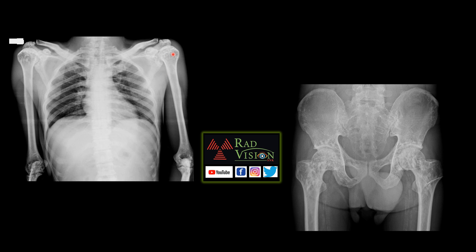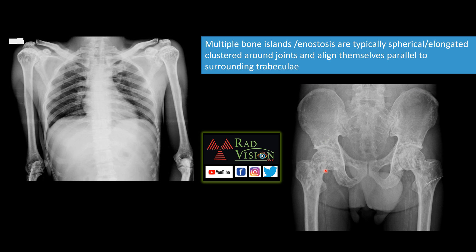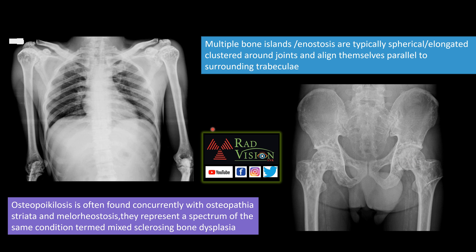The next case shows multiple round to oval spherical areas of sclerosis in a periarticular distribution, symmetrically clustered around the long bones adjacent to joints. These are multiple bony islands or enostoses. They can be spherical or ovoid, clustered near joints, and are aligned parallel to the trabeculae. This is a case of osteopoikilosis.